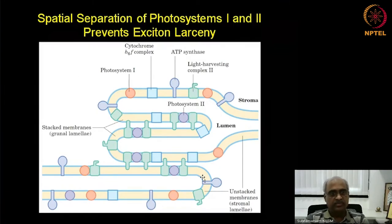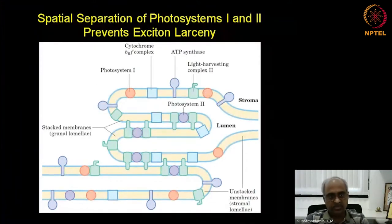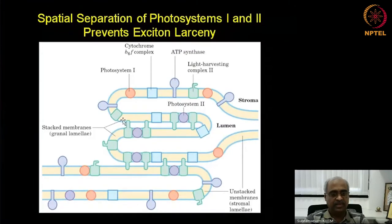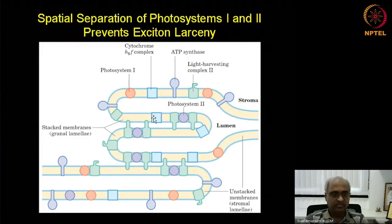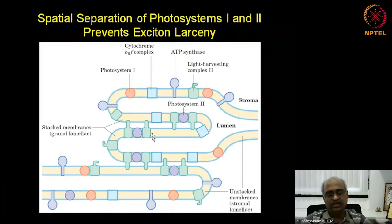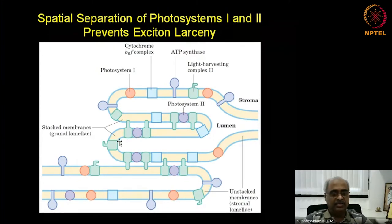First let us look at photosystem 1 and photosystem 2. In this diagram you can see the stacked granum thylakoid where membranes are appressed against each other, while at the bottom they are exposed to the stroma. If you look at the diagram, you don't see photosystem 1 in the appressed region — you see photosystem 2 primarily in that region, and the light harvesting antenna that harvests light energy for photosystem 2.